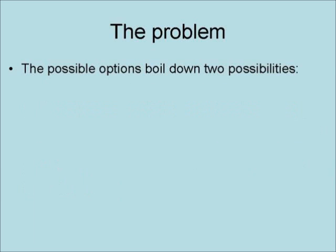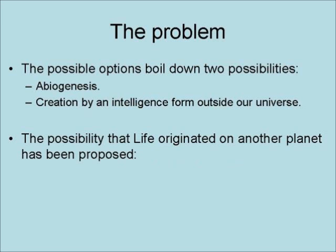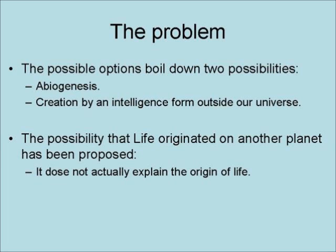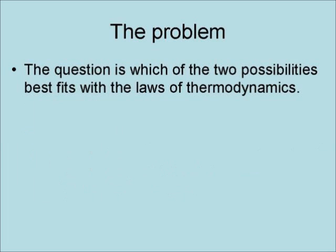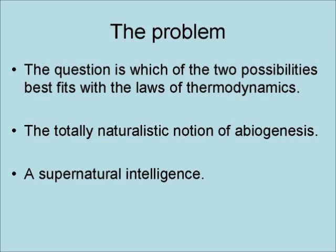Forming life from non-living chemicals requires a tremendous reduction in entropy, so any theory on the origin of life must be able to account for this. The possible options boil down to two possibilities: abiogenesis and creation by an intelligence from outside our universe — that is, a supernatural intelligence. The possibility that life originated on another planet does not actually explain the origin of life; it only moves it to another planet. The question is which of the two possibilities best fits the laws of thermodynamics.